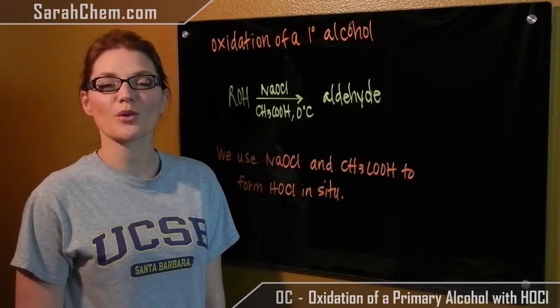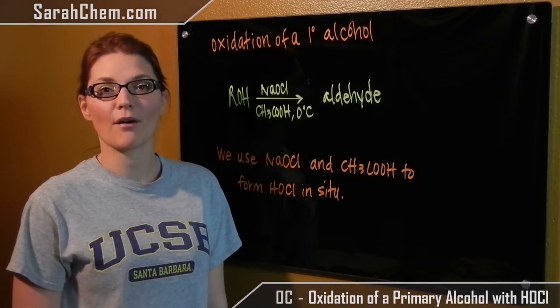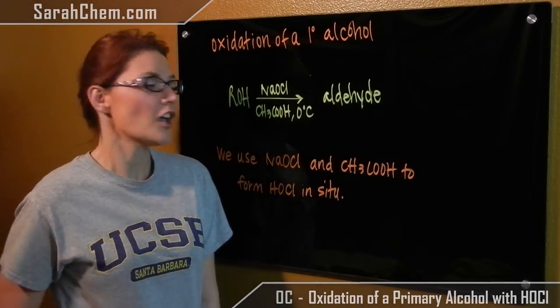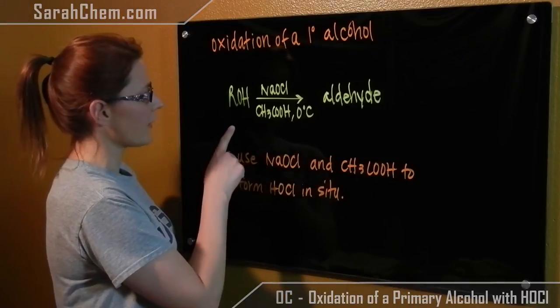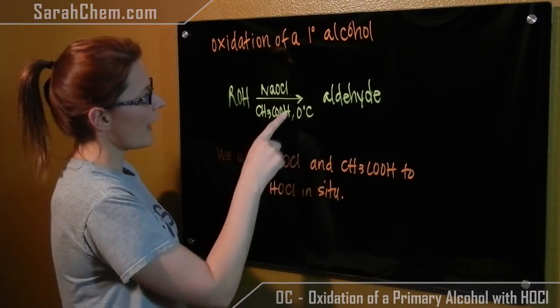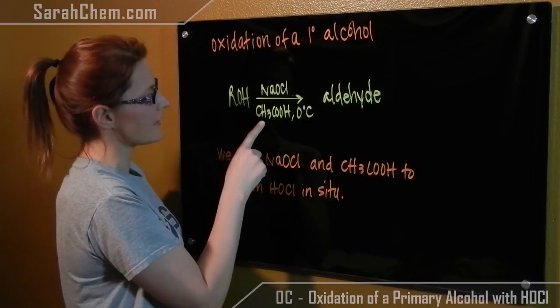Hi everyone, this is a video tutorial for the oxidation of primary alcohol using HOCl. If we take a look at the general setup here, we're going to take our primary alcohol and react it with sodium hypochlorite and acetic acid.